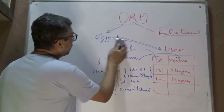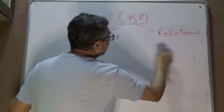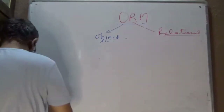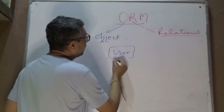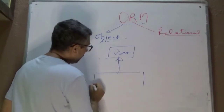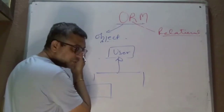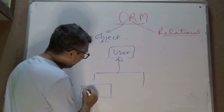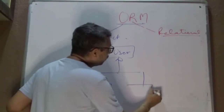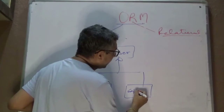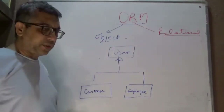The next mismatch is inheritance and polymorphism, which are fundamental concepts on the object side. You might have a User class and then Customer and Employee subclasses inheriting from User. But is there a concept of inheritance on the relational side? No, there is none.